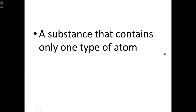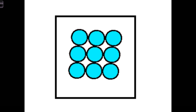Number two: a substance that contains only one type of atom — that's your definition of an element. Number three, if we look at this picture, this is an element. There's only one type of atom there.